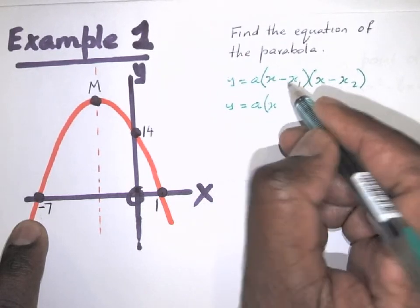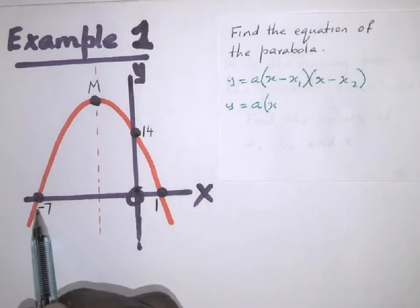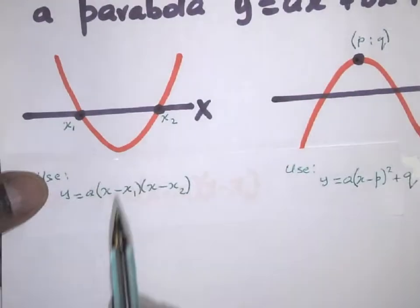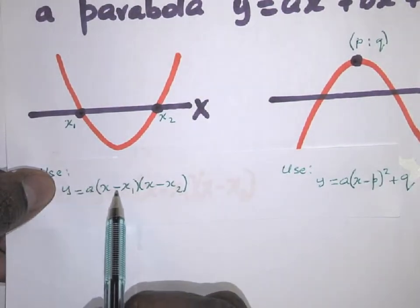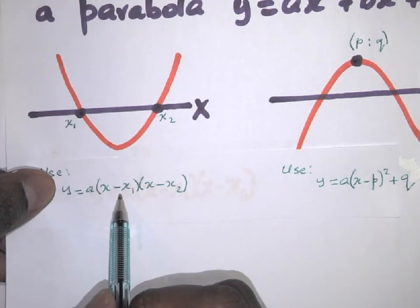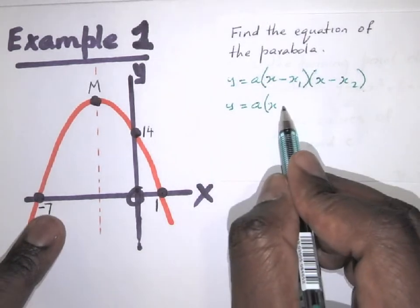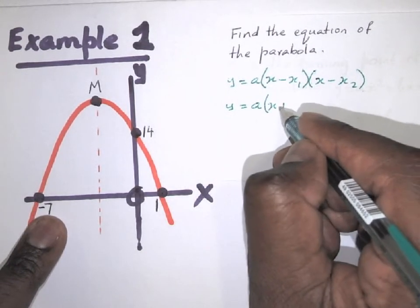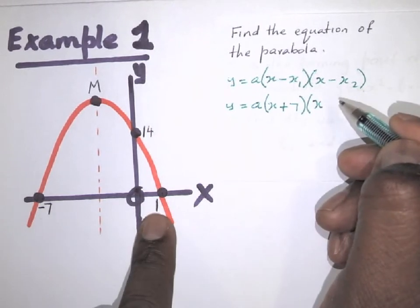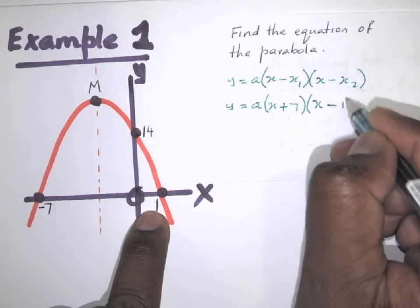So y = a(x − x1)(x − x2). Note that x1 is minus seven, so I change the sign: minus times minus seven gives plus seven. So we have y = a(x + 7). Then x2 is positive one, so in the bracket I put minus one: y = a(x + 7)(x − 1).